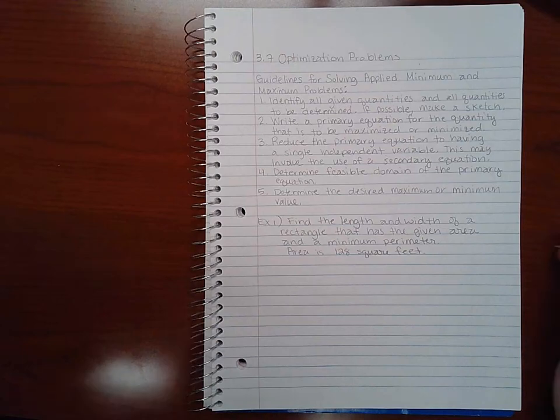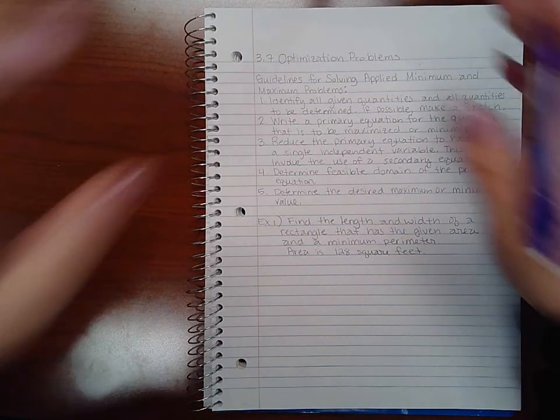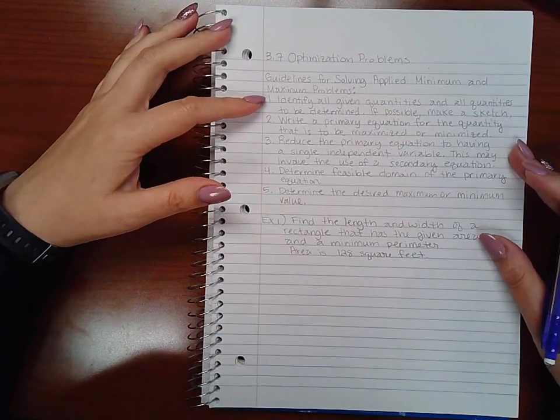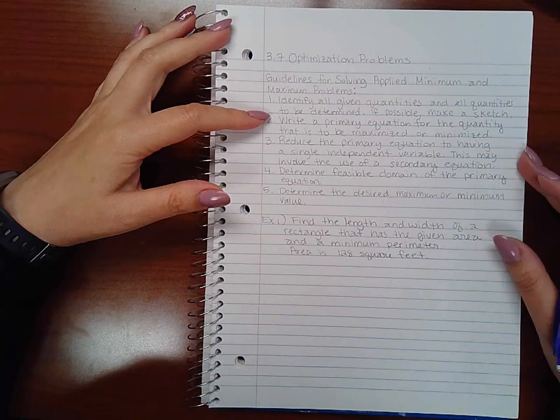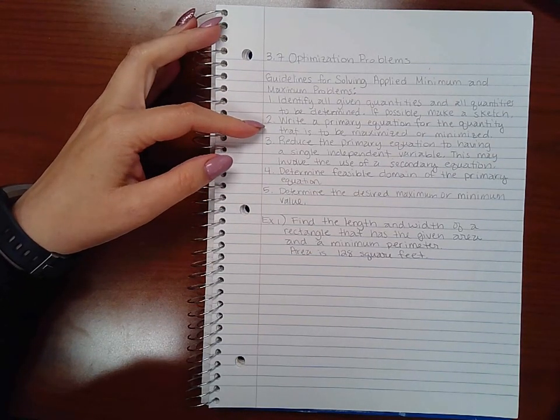Section 3.7 is optimization problems, so we have some guidelines here for solving applied minimum and maximum problems. First, identify all given quantities and all quantities to be determined. If possible, make a sketch. Second, write a primary equation for the quantity that is to be maximized or minimized.